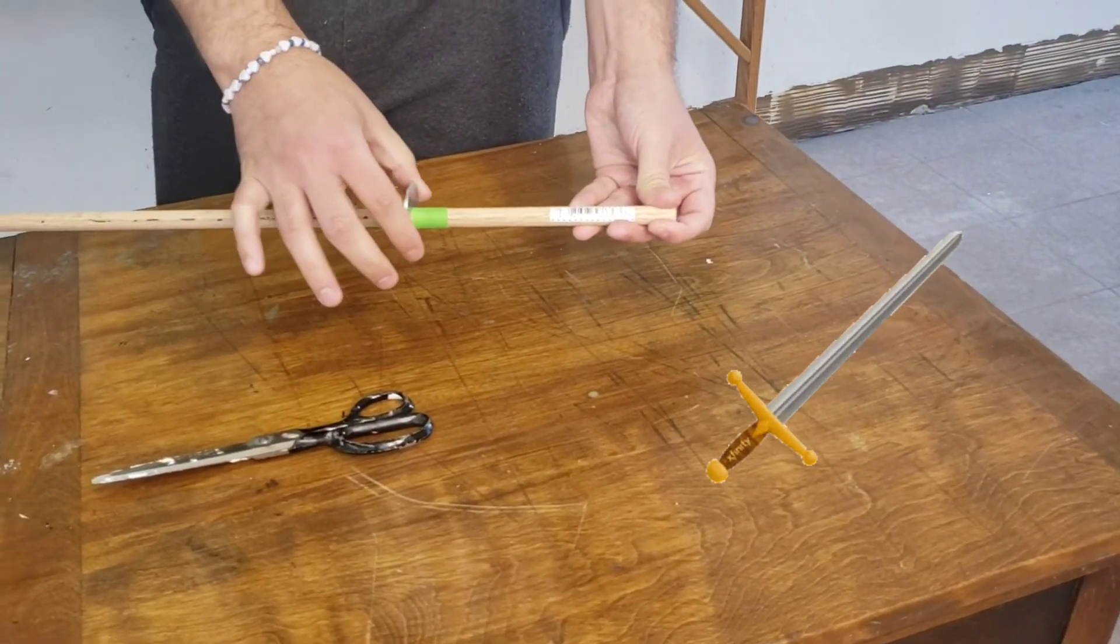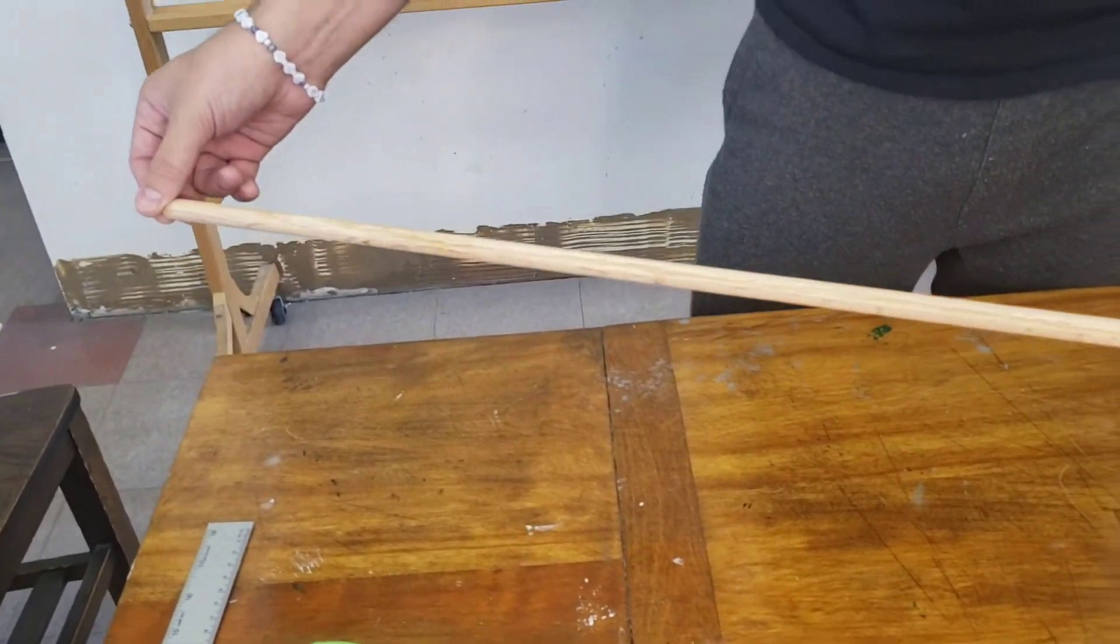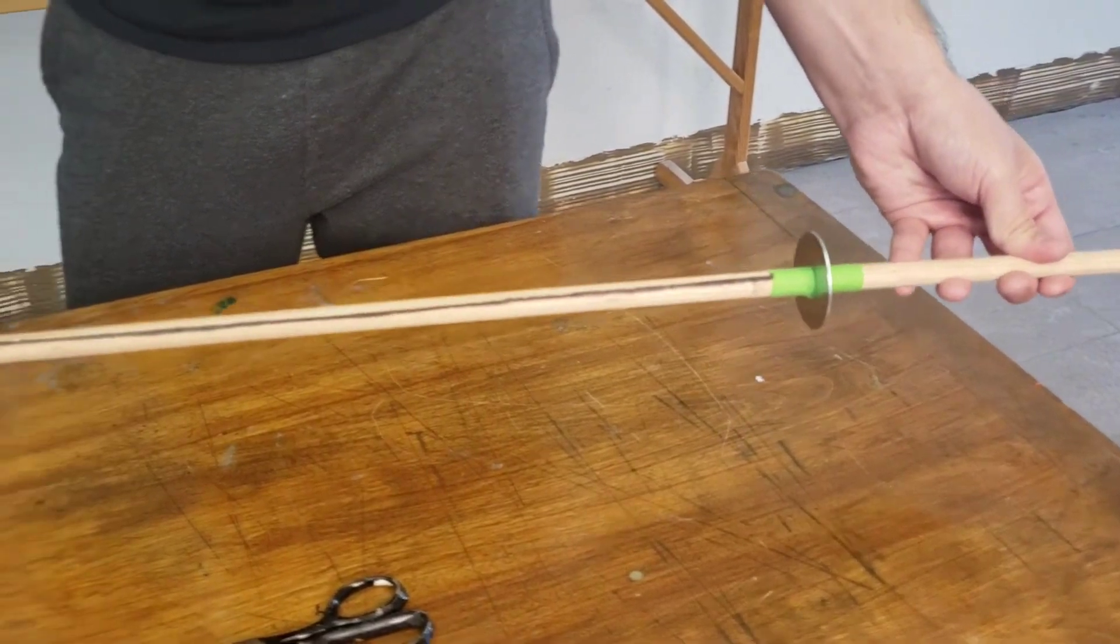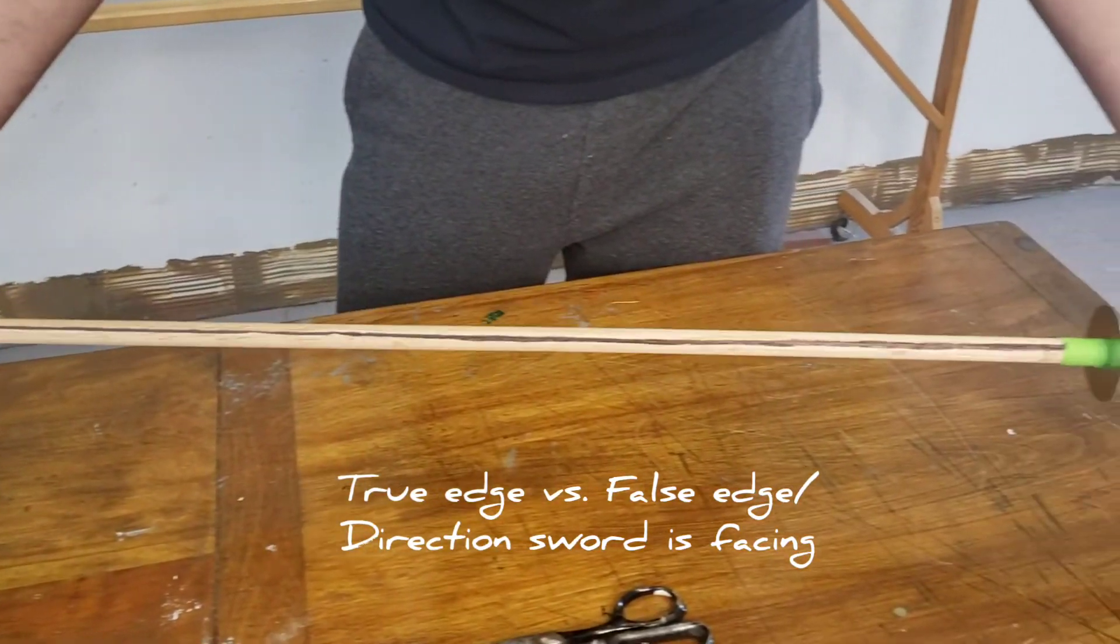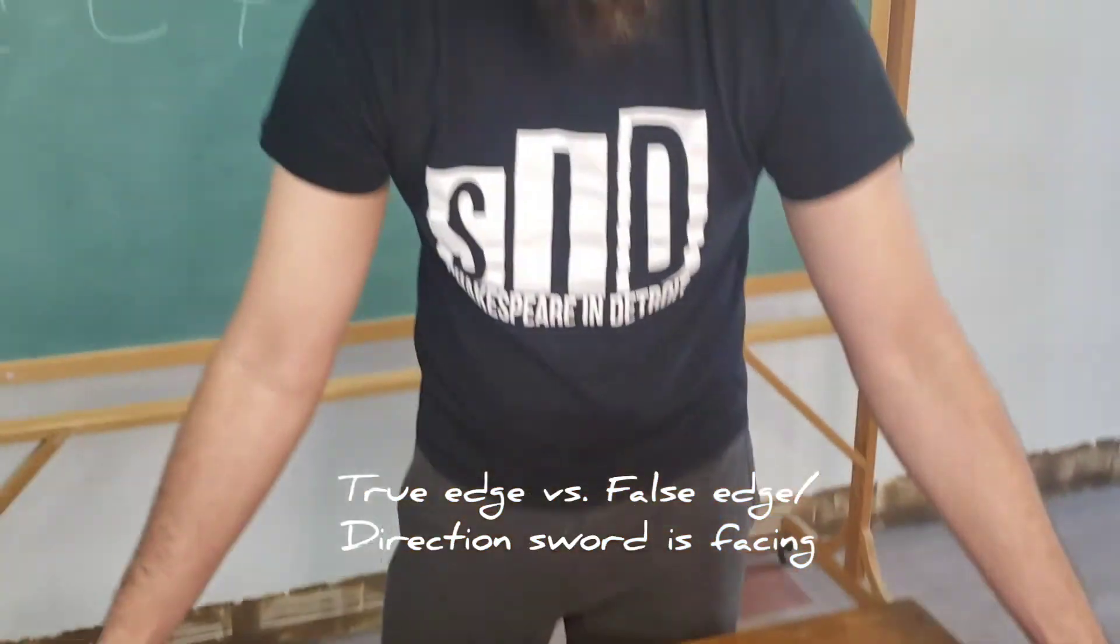So this will not fly off when you're working. And the tape is a little bit too wide to mark the true edge like we did the last time. So I put the tape on and drew a line with our Sharpie, and then removed the tape to indicate the true edge versus the false edge, so we know which way our sword is facing. And there you have it. There is our dowel rod sword.